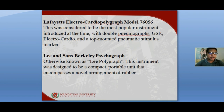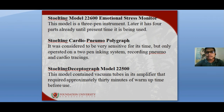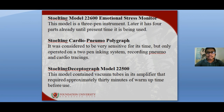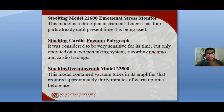The Stoelting Model 52600 Emotional Stress Monitor is a three-pen instrument, later expanded to four parts, and is still in use today. The Stoelting Cardio-Pneumo Polygraph was considered very sensitive for its time but only operated on a two-pen inking system recording pneumo and cardio tracings. The Stoelting Deceptograph Model 22500 contained vacuum tubes in its amplifier that required approximately 30 minutes of warm-up time before use.